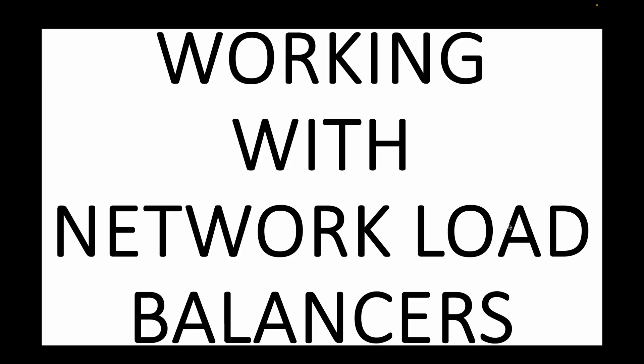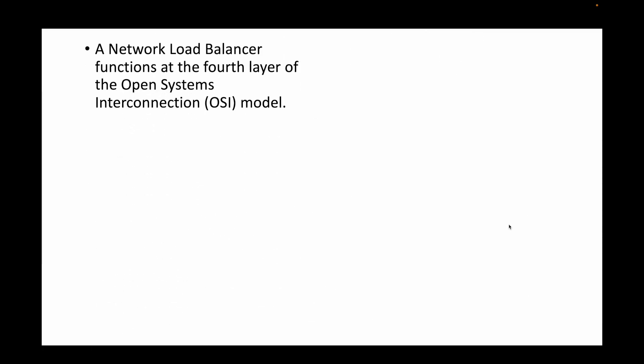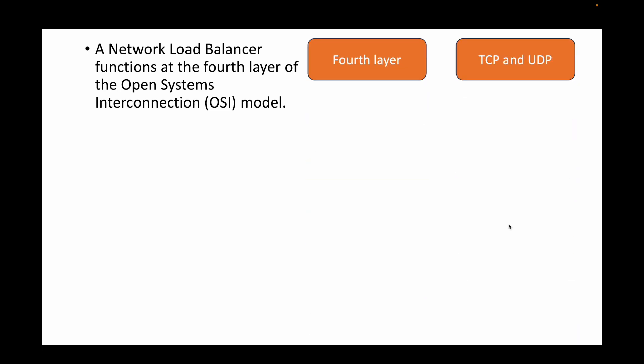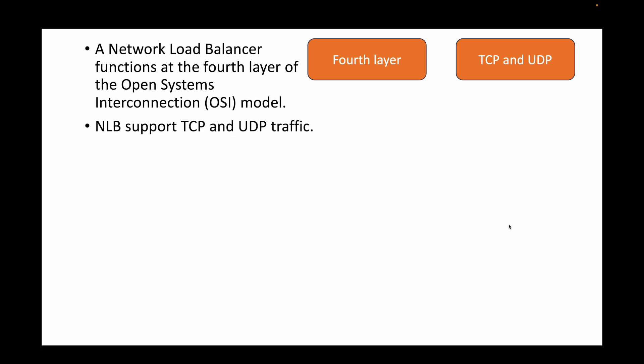The network load balancer operates at the fourth layer of the OSI model — the Open Systems Interconnection model. Your application load balancer operates at the seventh layer, which is the application layer, while the NLB operates at the fourth layer. The NLB mainly supports TCP and UDP traffic, and it helps you handle millions of requests per second.